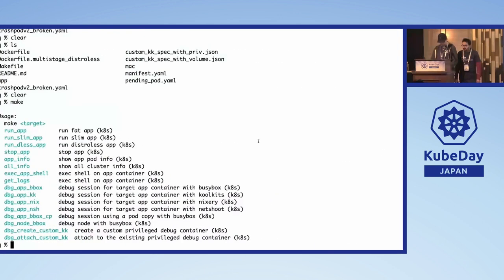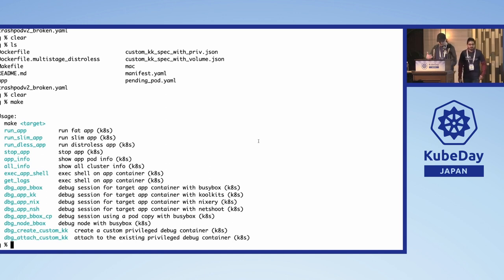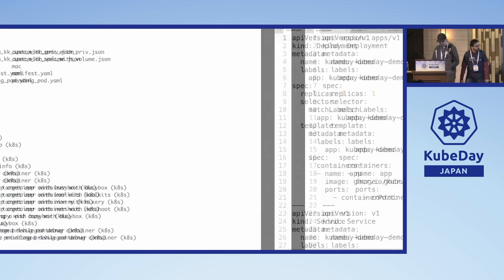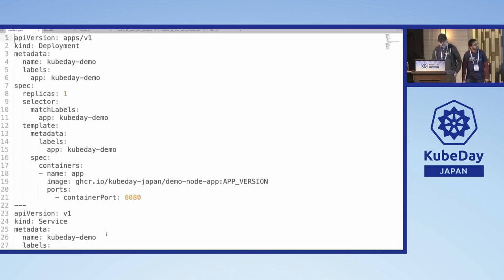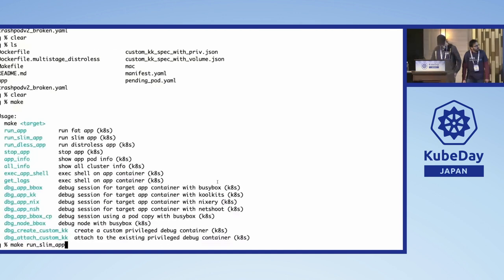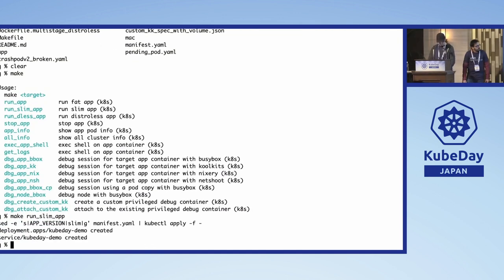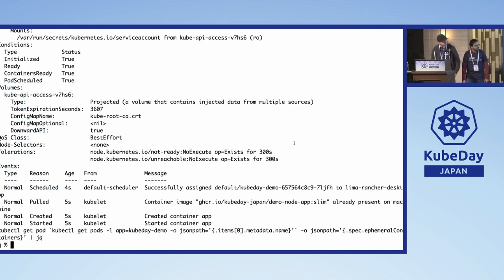In the demo application, the Makefile has a nice menu of different options. We'll start by creating the application — it has a deployment with one pod, the demo app image, and a service. The application is now running and we're using the slim image.